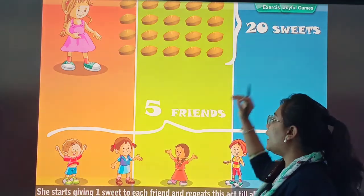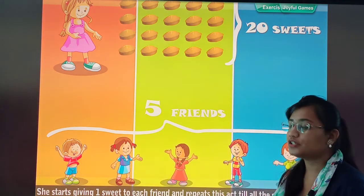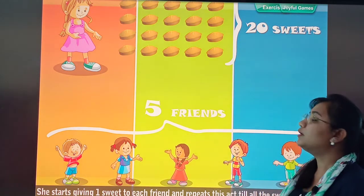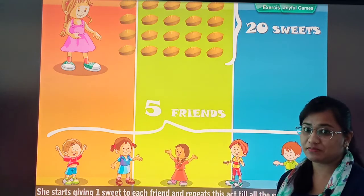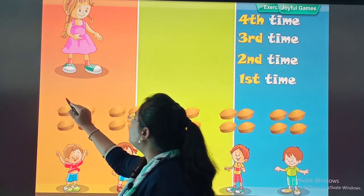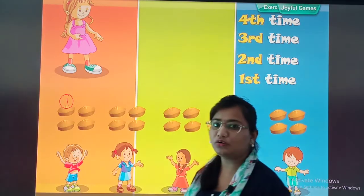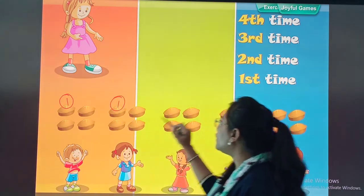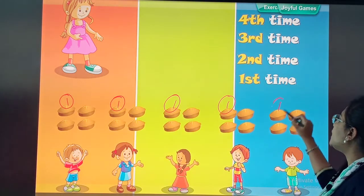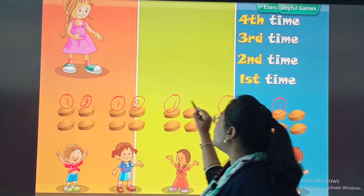Yeh 20 sweets hai. And yeh sneha hai. Sneha ki 5 friends. Now, she will divide 20 sweets among her 5 friends and the division will be equal. Matlab, sare friends ko same number of sweets milenke. So, sweet number 1. Yehaan se eek sweet haam ne 20 sweets mein se eek sweet friend number 1 ko diya. Phir, eek sweet second friend ko diya. Eek sweet third friend ko diya. Eek sweet fourth friend ko diya. Eek sweet haam ne fifth friend ko diya.